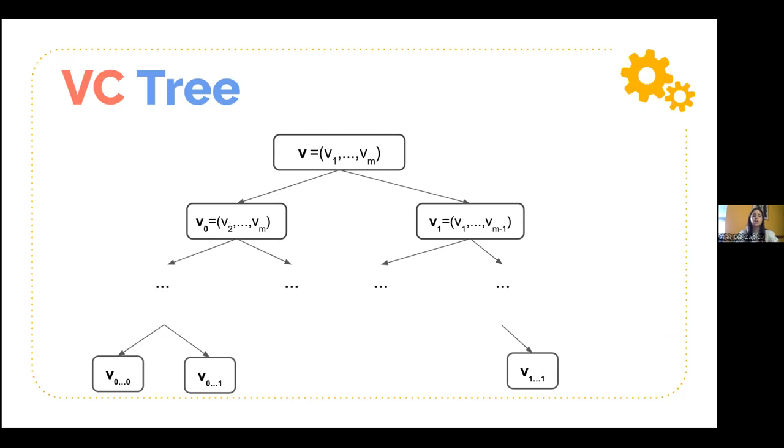The rough idea, the intuition, is that the prover can store the vector in the root of a tree, and then every node's children will consist of two vectors of half size containing the odd and the even positions respectively.